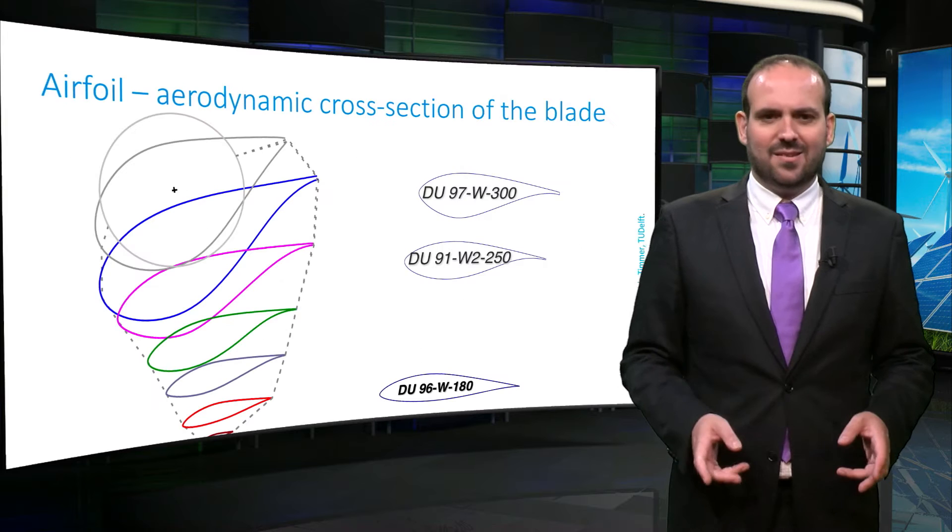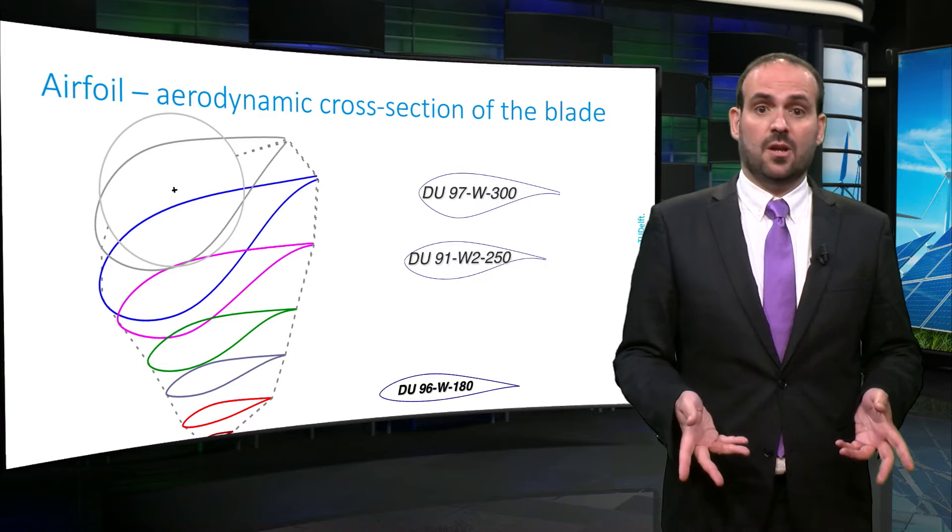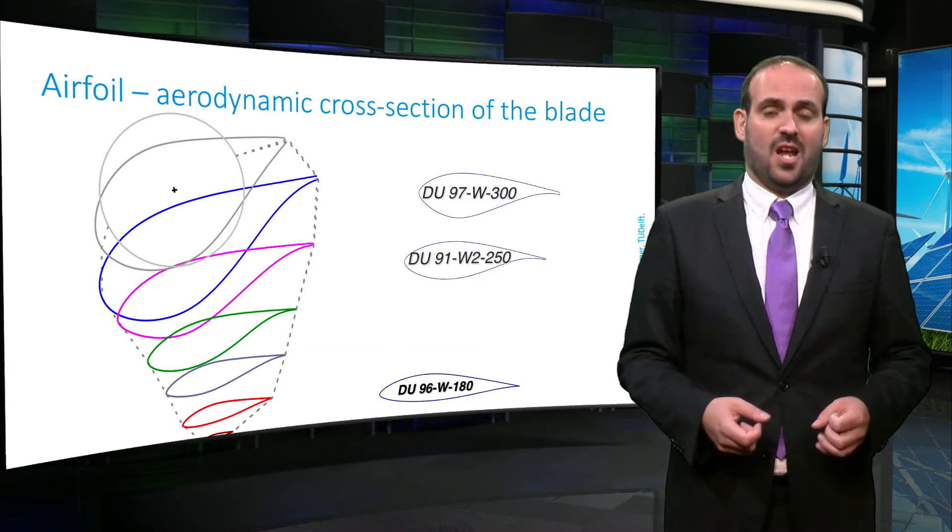A blade is defined by a span-wise distribution of aerodynamic profiles, called airfoils, which vary in thickness, shape, and performance.